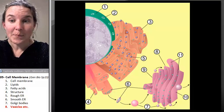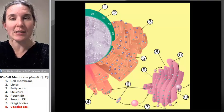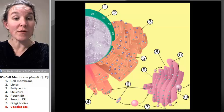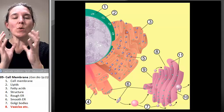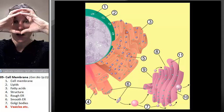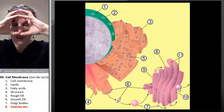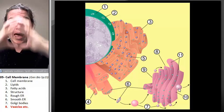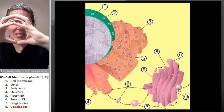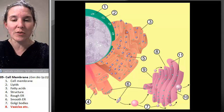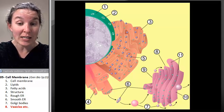The Golgi bodies pinch off these little vesicles. And a vesicle is nothing more than a bubble of cell membrane. It's like a mini cell inside the cell, filled with stuff. And the vesicle filled with stuff can carry out many different functions. We have different kinds of vesicles.